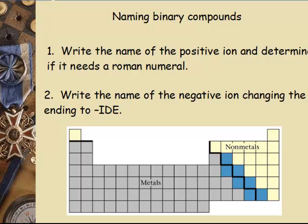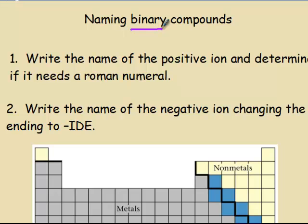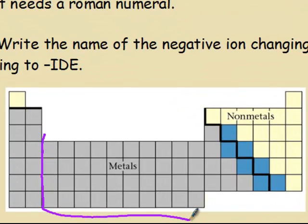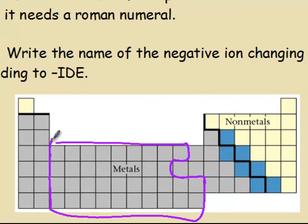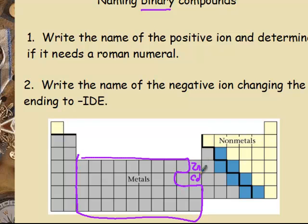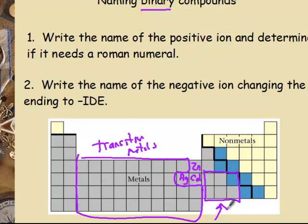Steps for binary ionic compounds: you're going to write the name of the positive ion, and then the key is — does it need a Roman numeral? From what we've learned, if it's in the transition metals section, with the exception of zinc, cadmium, and silver, it needs a Roman numeral. Those six elements on the lower right side of the periodic table also need Roman numerals. Anything else in the transition metals or that lower region has more than one charge, so it must have a Roman numeral. Once we determine if it needs one, we figure out the Roman numeral, then write the name of the negative ion, changing the ending to '-ide' for binary substances.